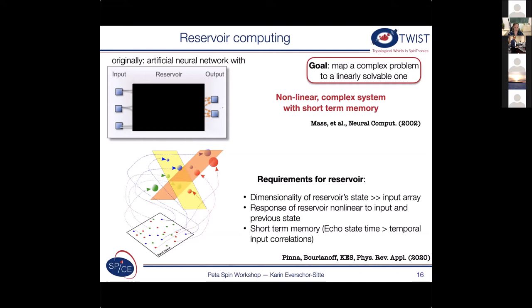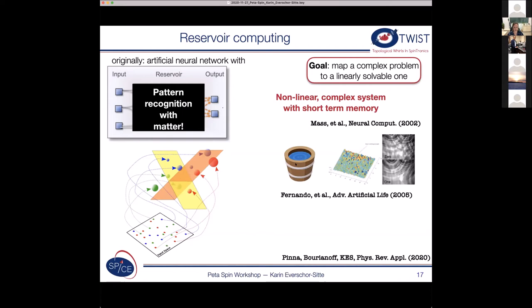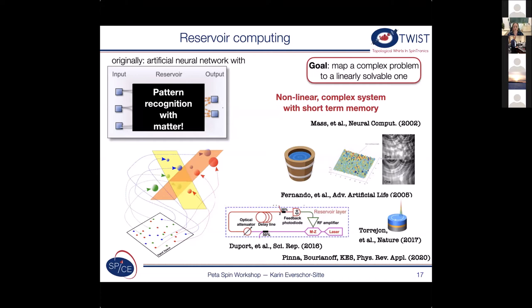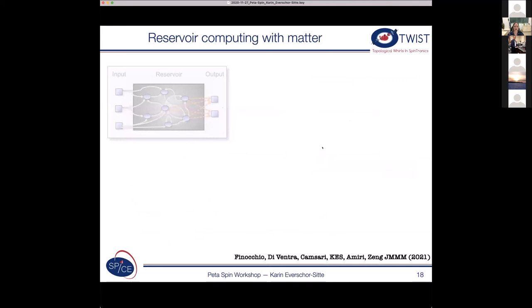And this we have all over in physics. So this then allows to do pattern recognition with matter. And that's what people have been doing, for example, even with water buckets. And now the question is just what is the most practical system? So you can do it with water buckets, but probably you don't want to do computation with having a lot of water buckets in your house. People have done this with optical systems. And here's an example from Julie's group who did it with spin-torque nano oscillators. And she just gave the presentation. So before I tell you our idea, I would like to summarize this a little bit. So how is this actually working?